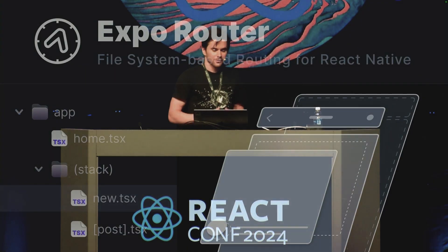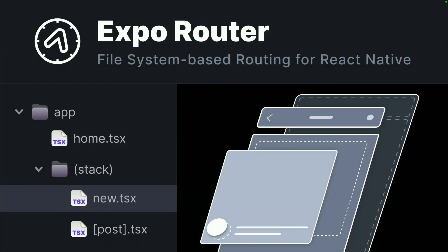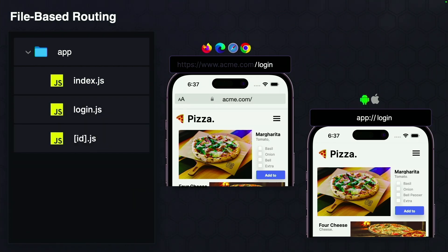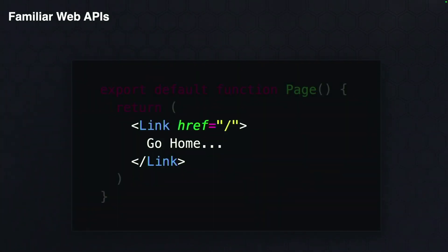So where do we go from here? I'm Evan Bacon, an engineer and the creator of Expo Router. It's the first file-based router for building React apps that run on both web and native platforms. By simply creating files in the app directory, Expo Router instantly creates robust navigation for both your native app and website. It uses familiar web APIs such as Link and Href to move between routes.